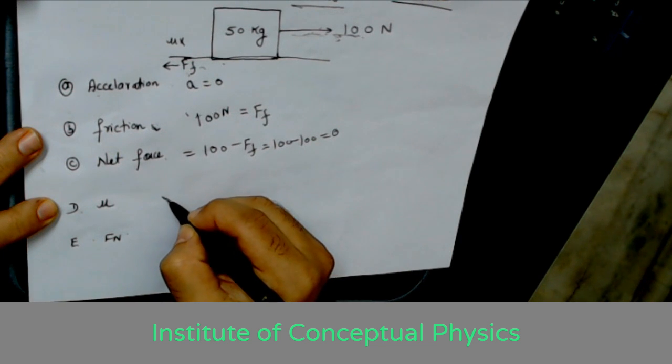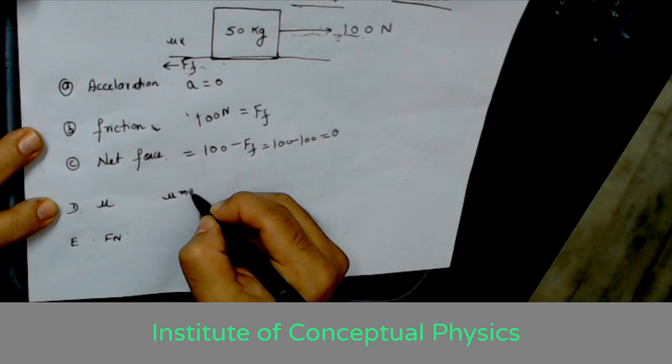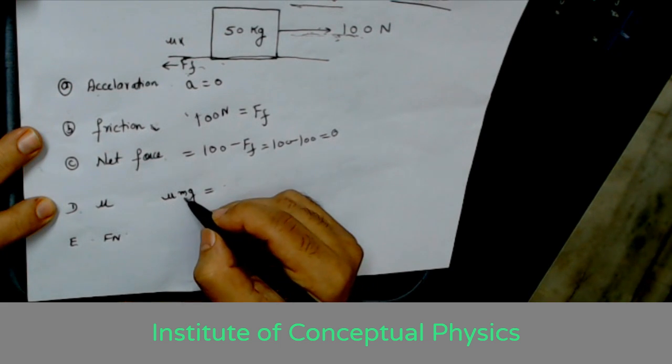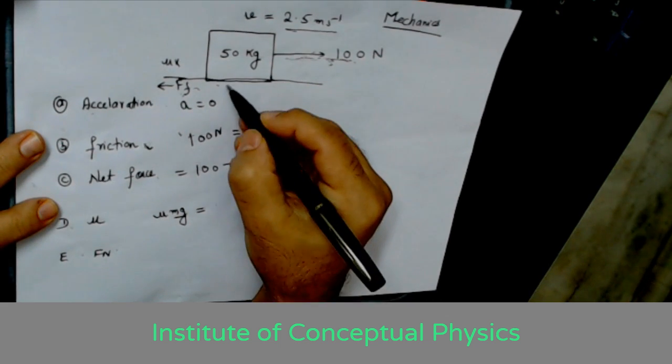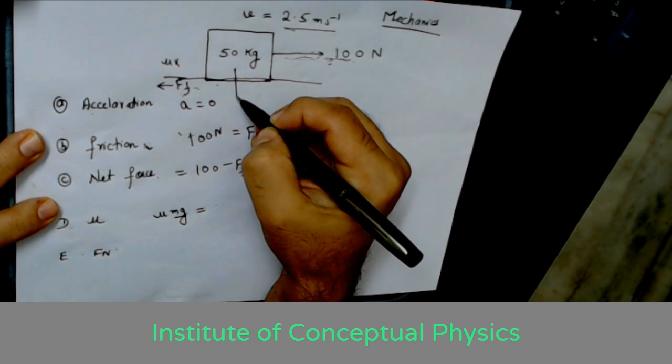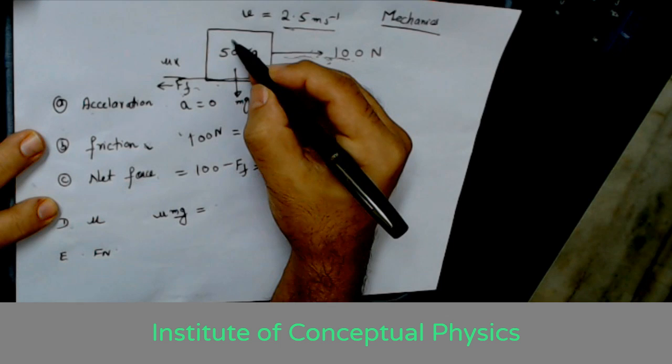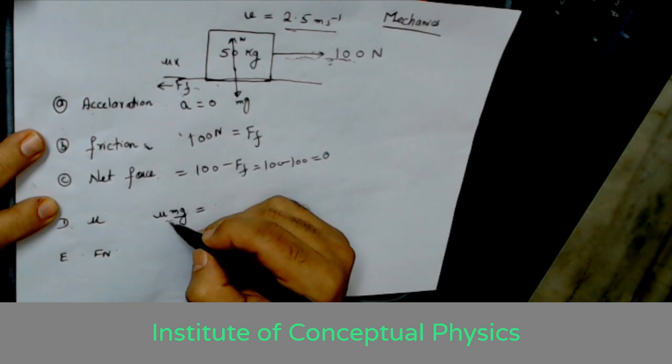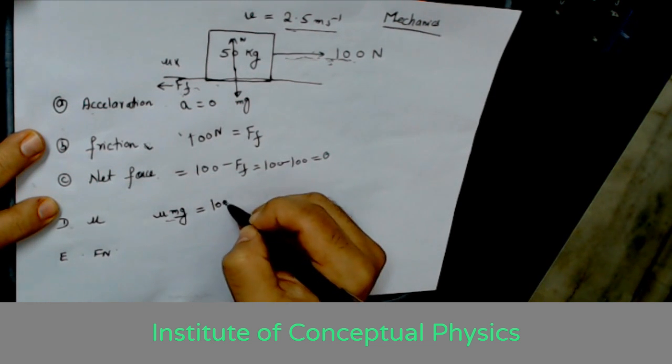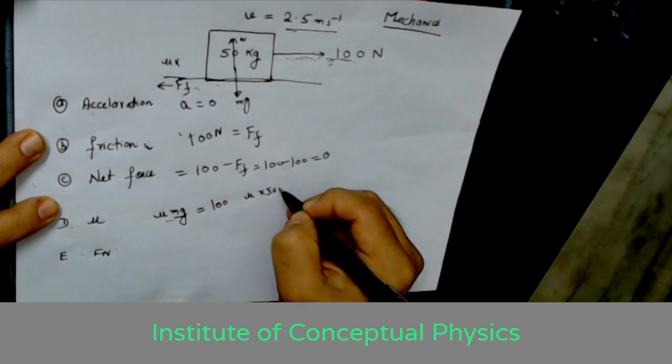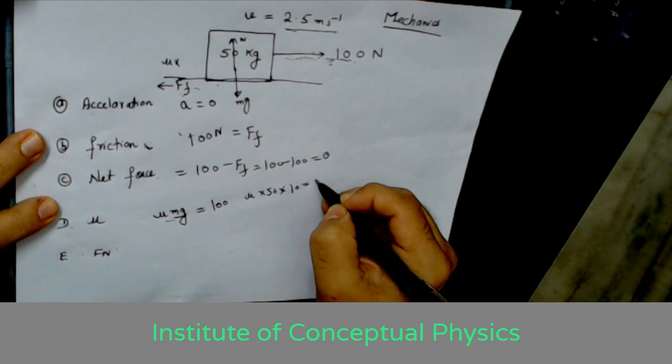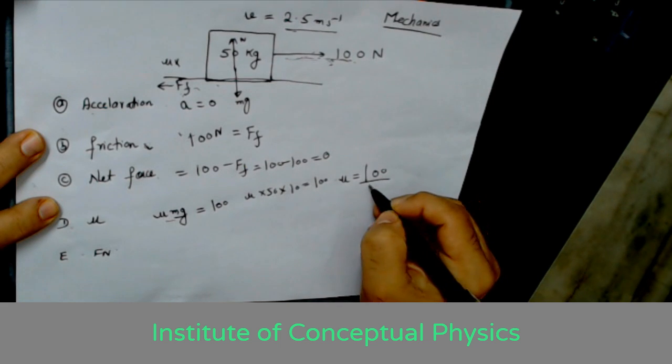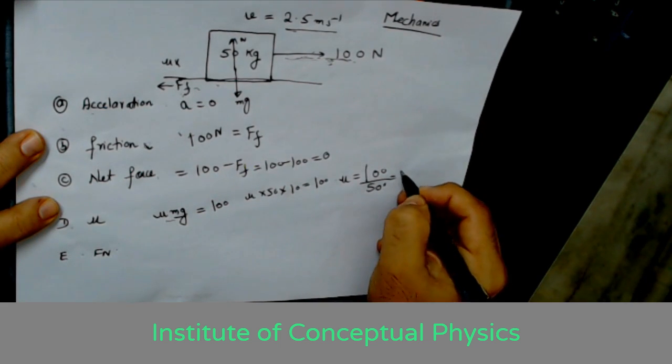The coefficient of friction is given by mu times mg, which is equal to the normal reaction. In this case, mg is the normal reaction. So we know the frictional force is equal to 100. So mu multiply by 50 multiply by 10 is equal to 100, and you get mu is equal to 100 divided by 500. So you get your coefficient of friction as 0.2.